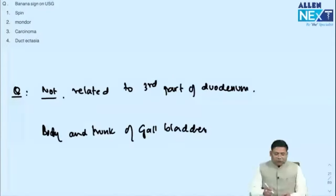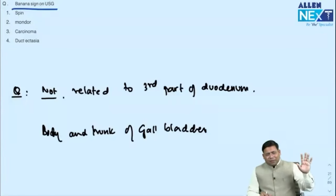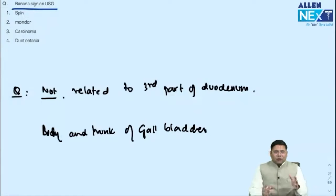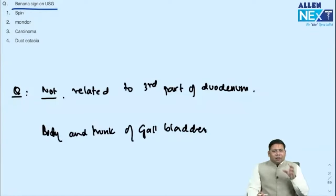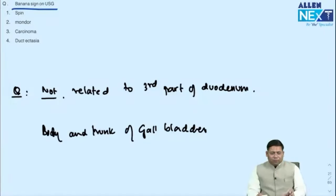A question on banana sign on ultrasound — this is associated with spina bifida and Arnold-Chiari malformation. In spina bifida, a banana sign may be seen on USG. Another question on the third part of the duodenum — the body of the gallbladder and trunk are intraperitoneal, while the third part is retroperitoneal.